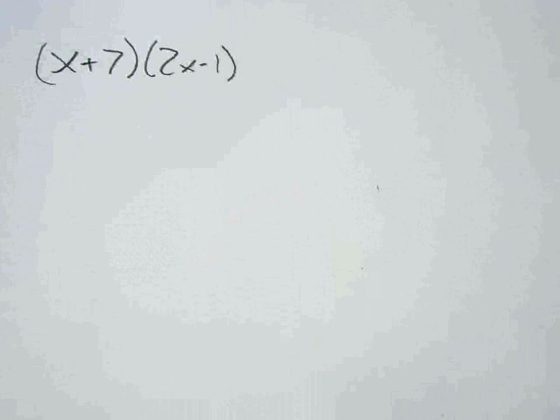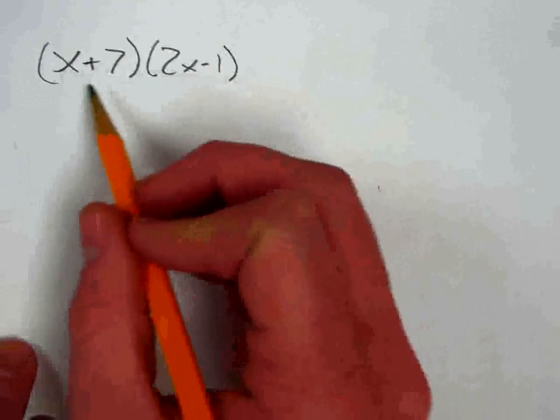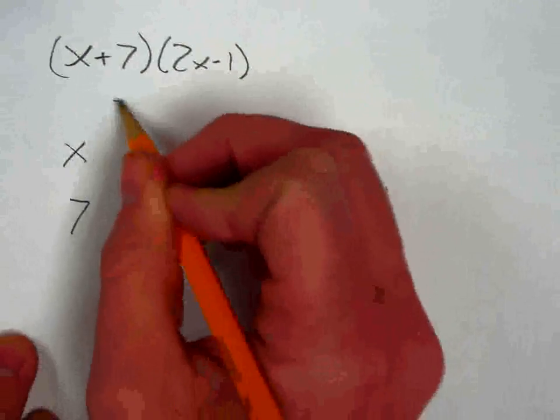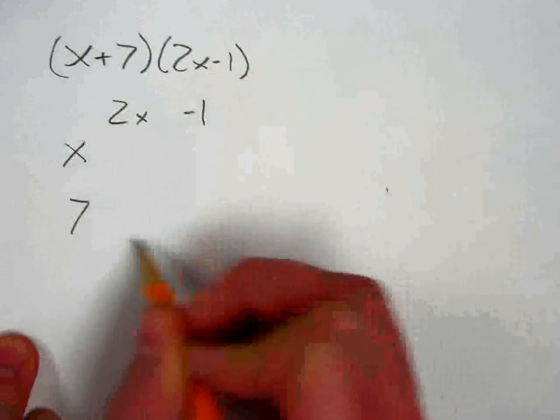Multiplying polynomials with the distributive property is very similar to multiplying with the box method. I'm going to start by referencing my last video. If you haven't watched that, you might want to go back and watch it.